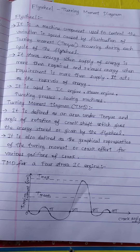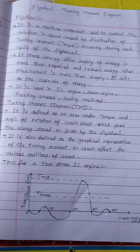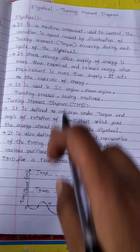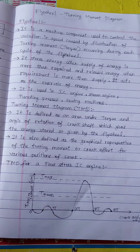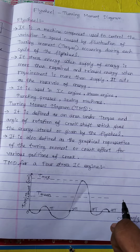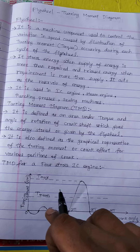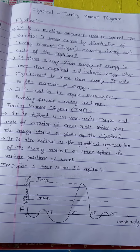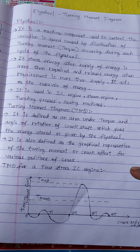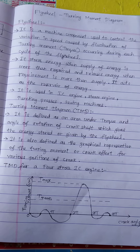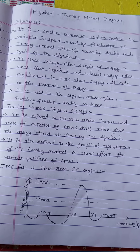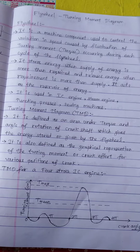Here I have illustrated the turning moment diagram for a 4-stroke IC engine. In the y-axis I have taken the turning moment, and in the x-axis this is the crank angle. For various positions of the crank, what torque is available in the IC engine? In a 4-stroke engine, for one power stroke, we are having 2 revolutions of the crank.